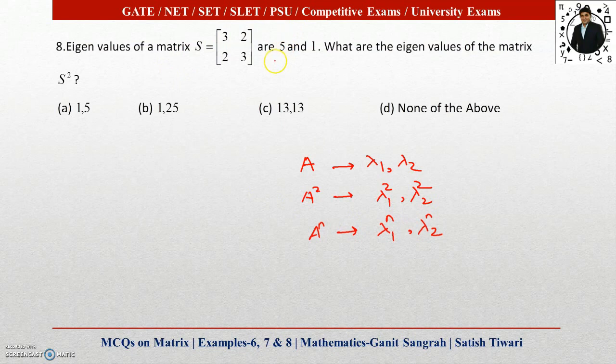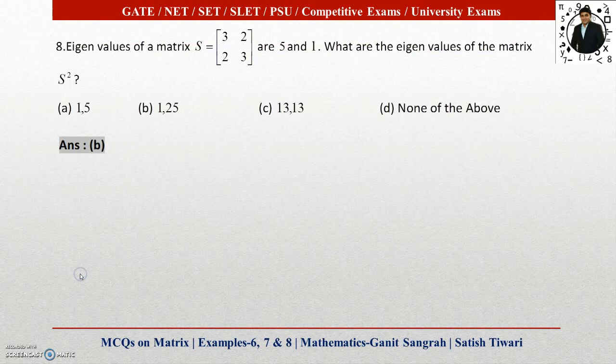So you can easily identify the eigenvalues here. Square of 5 is 25 and square of 1 is 1. Therefore, the correct answer is B.